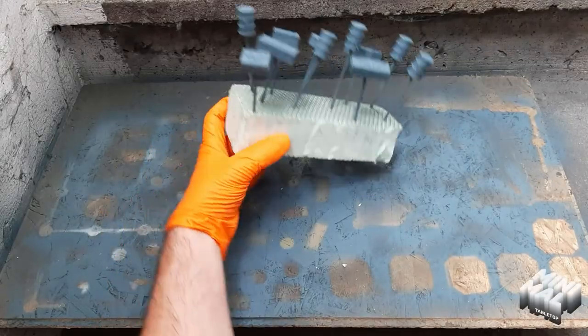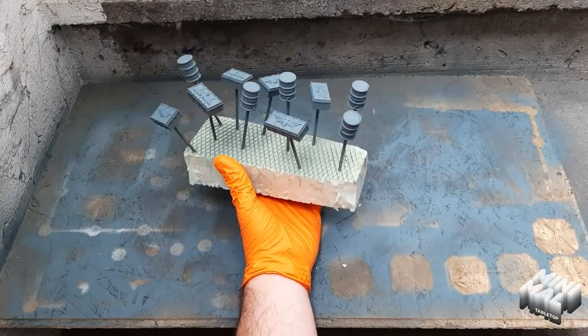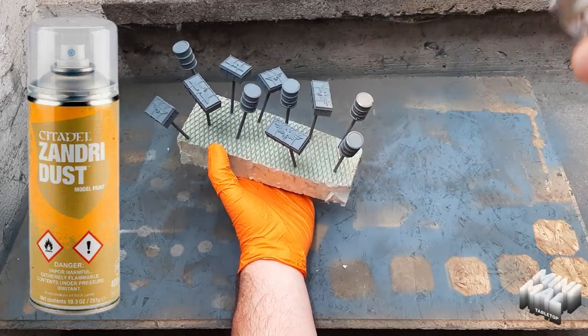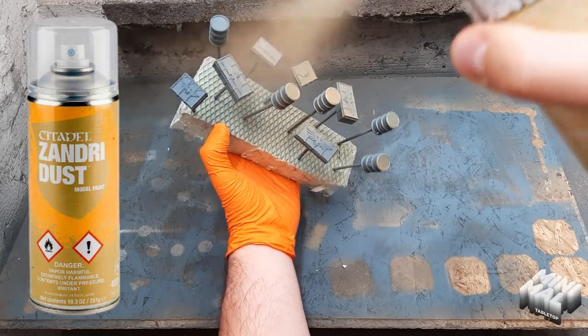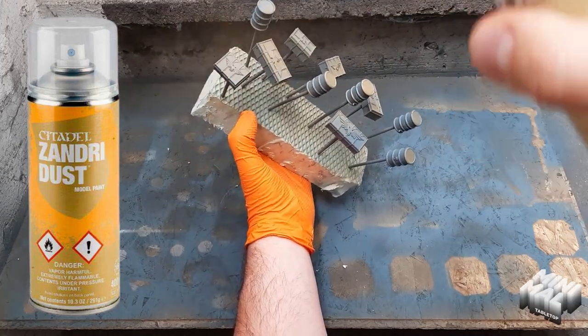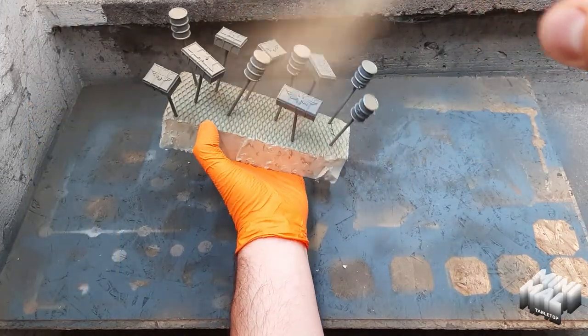Now I take the colored primer spray and spray on the object from above but leave out the shady areas where the gray should still shine through. It's very easy to create a great contrast like this which will be emphasized again by another painting step later in the process.